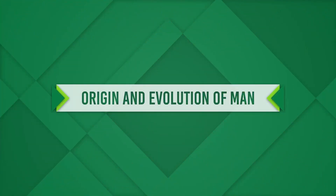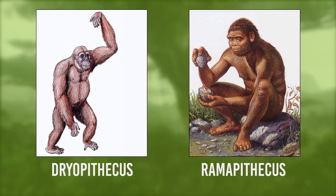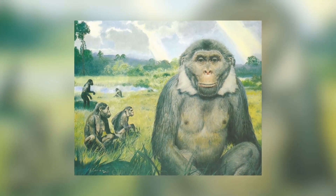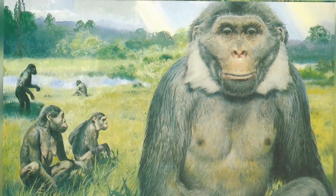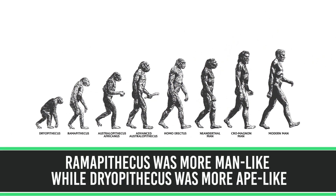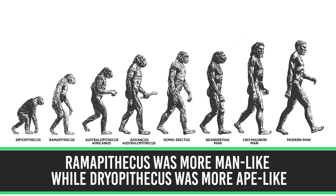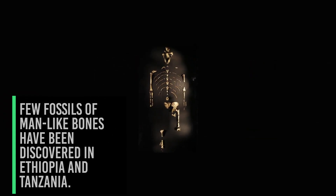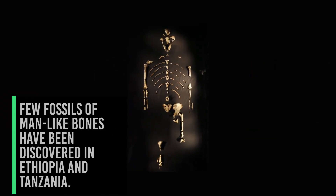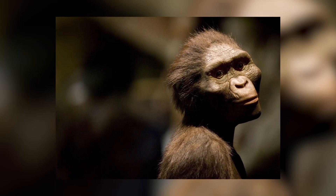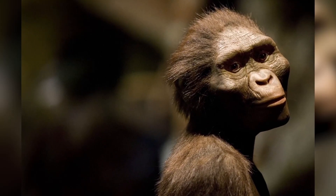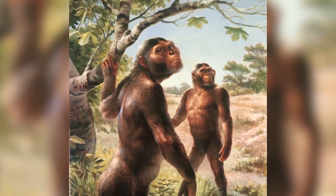Origin and evolution of man. About 15 million years ago, primates called Dryopithecus and Ramapithecus were existing. They were hairy and walked like gorillas and chimpanzees. Ramapithecus was more man-like while Dryopithecus was more ape-like. Few fossils of man-like bones have been discovered in Ethiopia and Tanzania. These revealed hominid features, leading to the belief that about 3 or 4 million years ago, man-like primates walked in eastern Africa. They were probably not taller than 4 feet but walked upright.